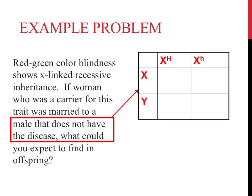The second part of the problem suggests that this male does not have the disease. Males cannot be heterozygous for X-linked recessive traits as they only have one X-chromosome. If a male has an X-linked recessive trait, they possess the recessive allele for that trait on their one X-chromosome. If they don't have the disease, they would just have one dominant allele on the X-chromosome.